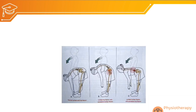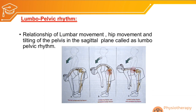Now let us discuss the lumbopelvic rhythm, which is an important topic. Lumbopelvic rhythm is the relationship of lumbar movement, hip movement, and tilting of the pelvis in the sagittal plane during forward bending and backward bending of the lumbar spine along with the hip joint.